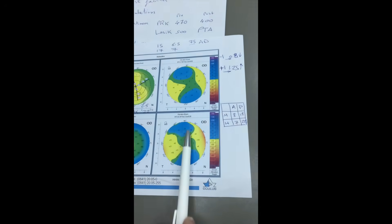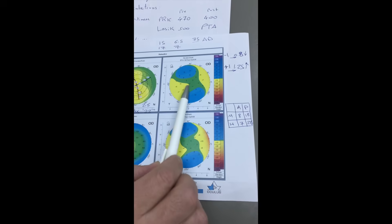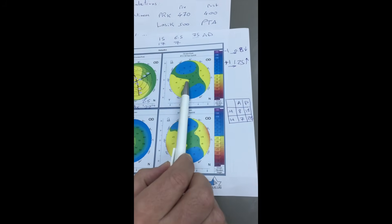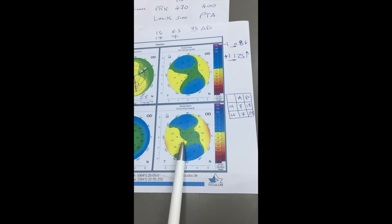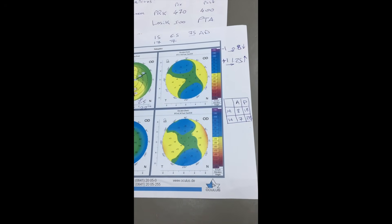The anterior and posterior elevation maps. We look at this symbol, which is the black empty circle. This is the symbol of the thinnest location. We look at the number corresponding to the thinnest location or the nearest number to it, like plus 3 on the anterior and plus 4 on the posterior.